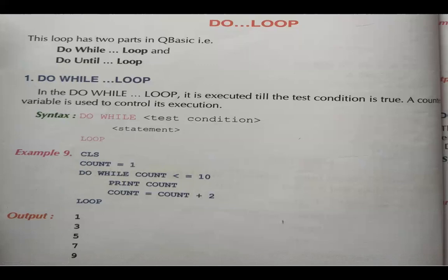Your variable can be A, X, Y or any such variable. Count equals to 1, so counting starts from 1. Until count reaches 10 you have to print counting and increase it. After 1, count plus 2 means it becomes 3. 3 is less than 10, so print 3.